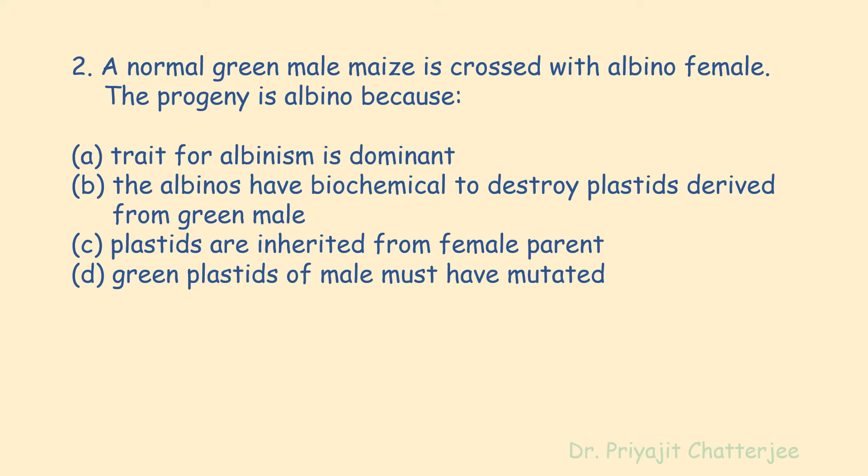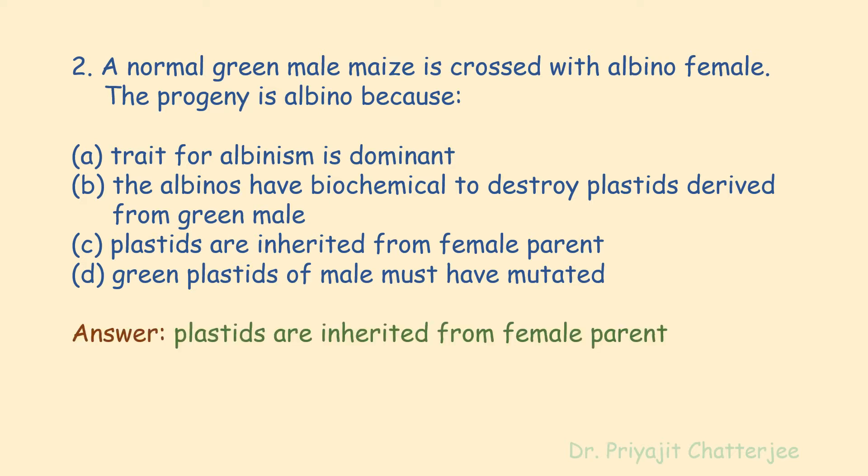The next question: a normal green male maize is crossed with an albino female; the progeny is albino. The options include: trait for albinism is dominant; albinos have a biochemical to destroy plastics; plastics derived from green male; plastics are inherited from female parent. The correct answer is option C — plastics are inherited from female parent — because plastids are inherited only from female parents, which is cytoplasmic inheritance.